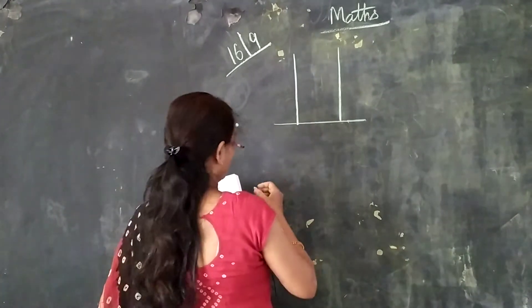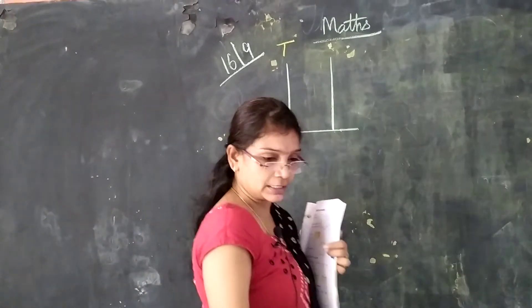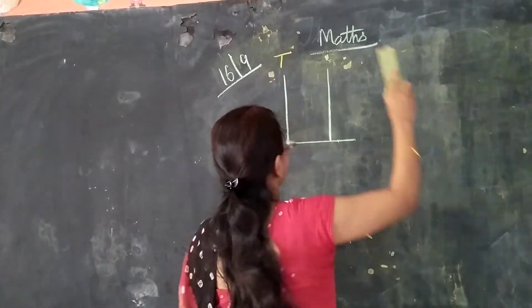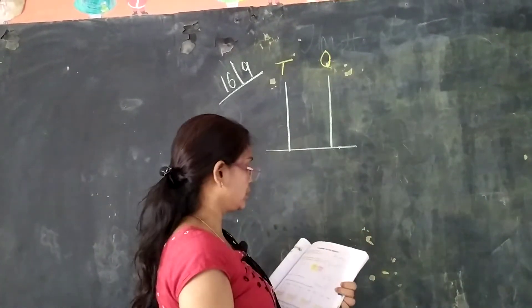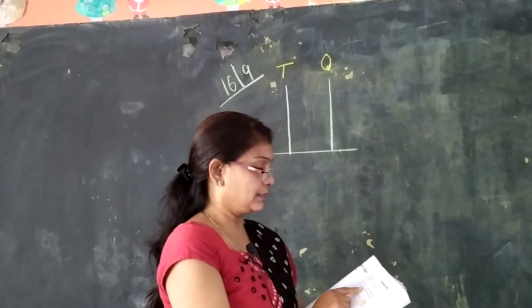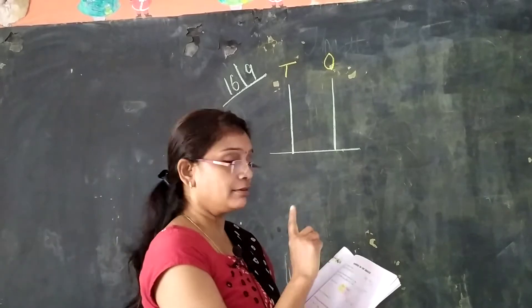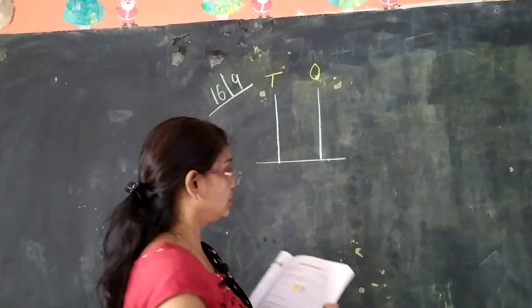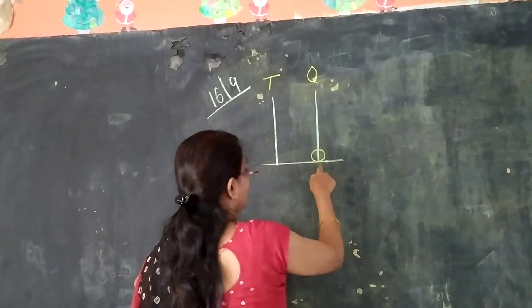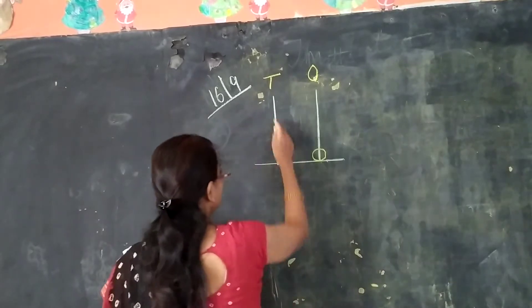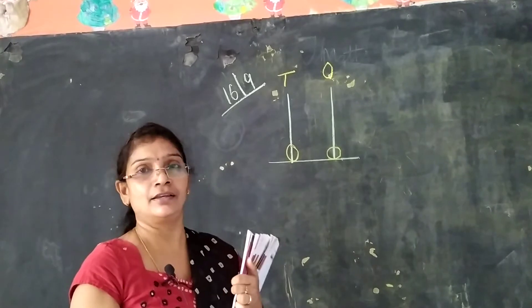One bead in the tens place stands for one ten. Right? Here I am showing you the difference, children. This is tens place and this is ones place. One bead in the ones place stands for one, and one bead in the tens place stands for ten. If a bead is in ones place it is only one; in tens place, one bead means it is ten, children. One ten.